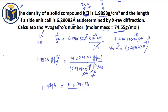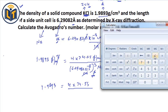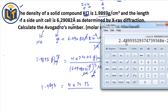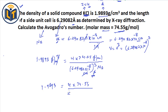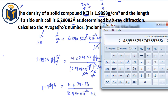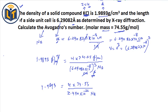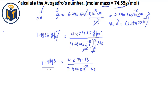Using a calculator, we compute 6.29082 times 10 to the power of minus 8, cubed. The result is 2.490 times 10 to the power of minus 22 centimeters cubed. This is the volume of the unit cell, confirmed correct.